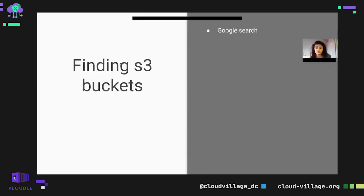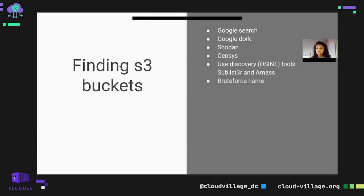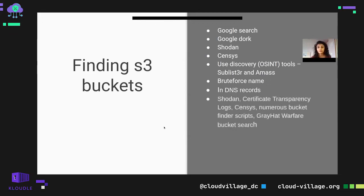For finding S3 buckets, you can use Google search, Google Dorks, Shodan, Censys, OSINT tools such as Sublister and Amass. Standard S3 naming conventions are like 's3.amazonaws.com' or 's3.amazonaws.com'. You can also find S3 bucket information in DNS records, certificate transparency logs, and use enumeration scripts such as Lazy S3 Bucket Finder, GrayhatWarfare, and WhatBuckets.